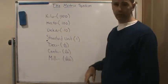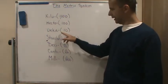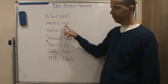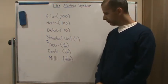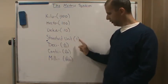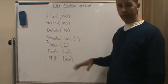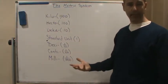So deca means 10, hecto means 100, and kilo is a thousand. And then we have our standard unit which is in the ones place.